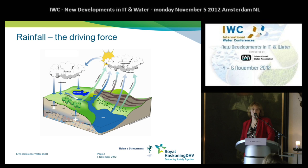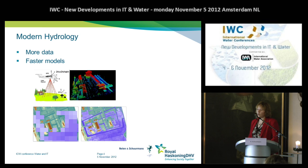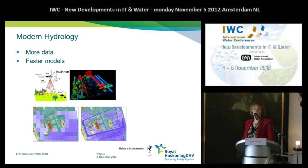Rainfall is the driving force for hydrology. You see the hydrological cycle here. Mainly in the Netherlands, where about 800 millimeters a year are falling, it's really the driving force for a hydrological system. What you see in hydrology in the last years is that there are more and more data coming available. A lot of remote sensing techniques are developing. Besides that, we have hydrological models, and they become faster as well.